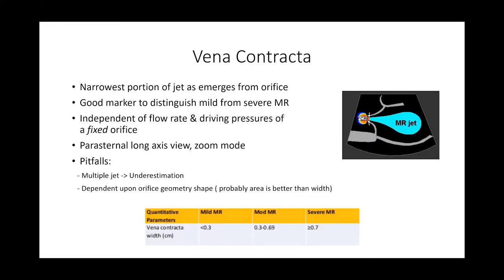The vena contracta is the narrowest portion of the jet as it emerges from the orifice. It's very helpful in distinguishing mild from severe MR and is independent of flow rate and driving pressure since it represents a fixed orifice. We measure it in the parasternal long axis view in zoom mode. A pitfall is that multiple jets will cause underestimation. These days the vena contracta area (rather than just width) is considered more accurate, as the orifice isn't necessarily circular. Using width as per ASE classification, more than 0.7 cm is severe and less than 0.3 cm is mild.